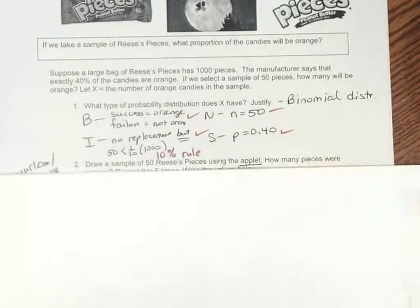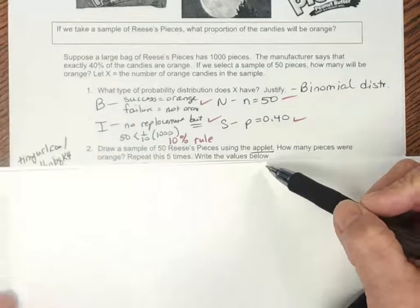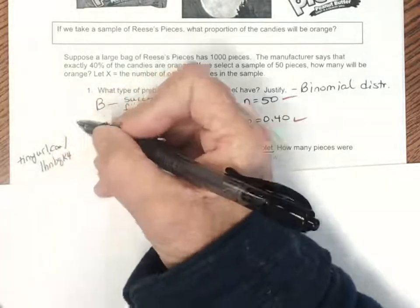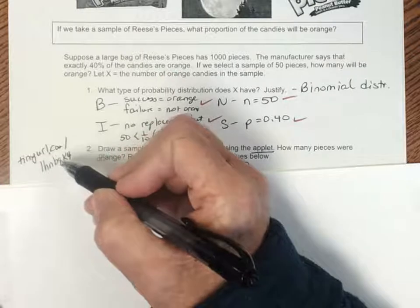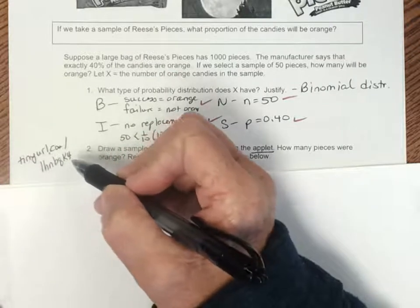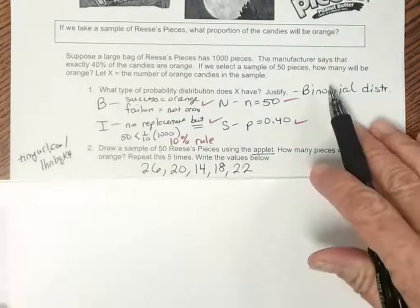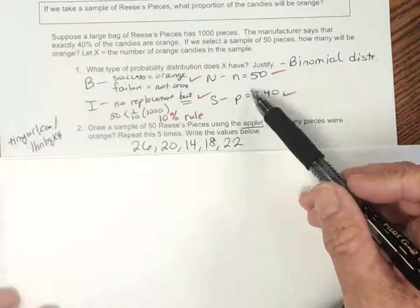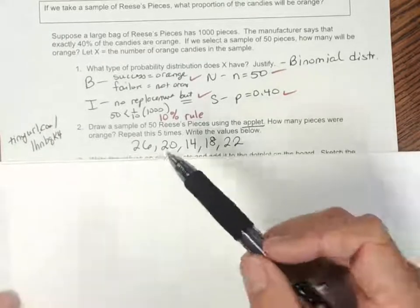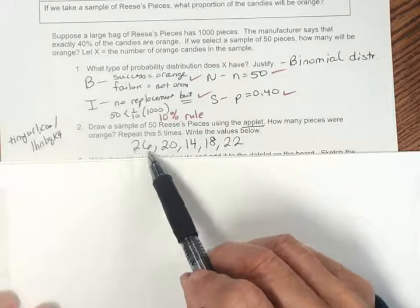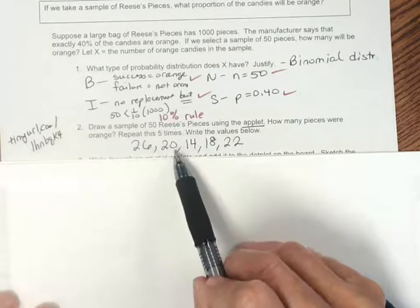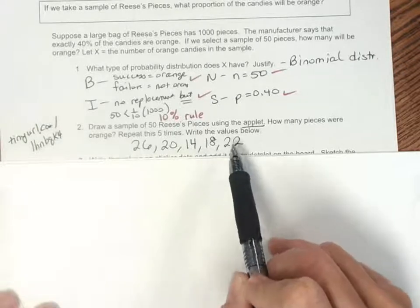We take a sample of 50 Reese's Pieces using this applet, found at tinyurl.com/LHNBQK4. We put in the probability and sample size and tell it to pick a sample. When I did that, I got 26 out of 50 pieces were orange. Then I did it again: I got 20, then 14, 18, and 22.